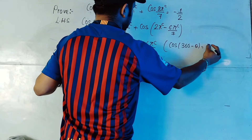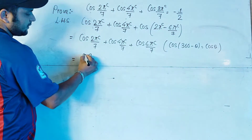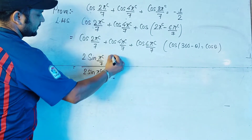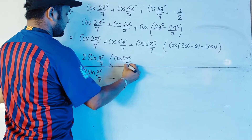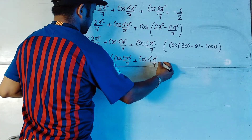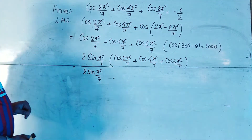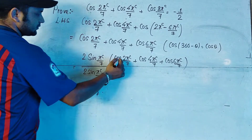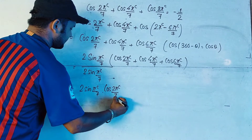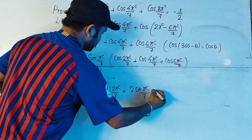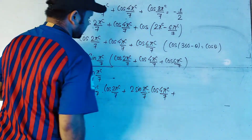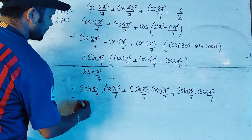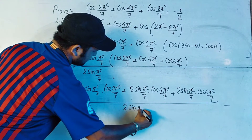Now we can multiply the numerator and denominator by 2sin(π/7). So what we have is cos(2π/7) + cos(4π/7) + cos(6π/7) in the numerator, and in the denominator we have 2sin(π/7).